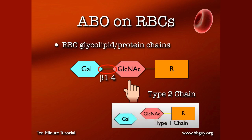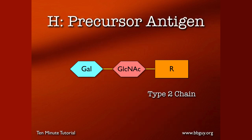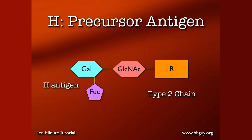The type 1 chain, on the other hand, which floats around free in plasma and in secretions, actually has a little bit of a different binding between those last two sugars — a beta 1,3 linkage. Anyway, that's a topic for another day. Moving on, once you have a type 2 chain, before you make either A or B antigen, you have to first make the H antigen. And that is done through the action of what's called a fucosyl transferase — an enzyme that puts a fucose onto that terminal galactose and changes this whole chain into an H antigen.